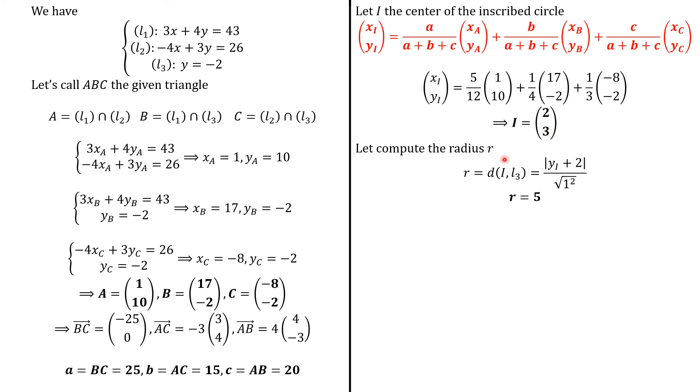Now, we have all the elements we want. So, we can have the equation of this circle. And it is given as follows. So, we replace x, y, and yI, and r by the values to have this.